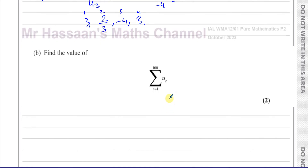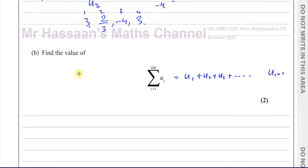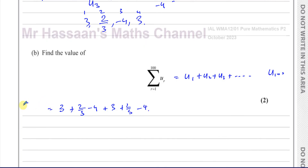Part b says find the value of the sum from r equals 1 to 100. Basically, it's asking us to find the first term plus the second term plus the third term, all the way up to the 100th term — the sum of the first 100 terms. The first term was 3, then 2 thirds, then minus 4, then 3 again, showing this is a periodic sequence where the same numbers repeat every 3 terms. It has a period of 3.